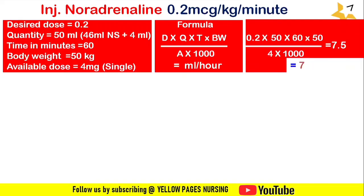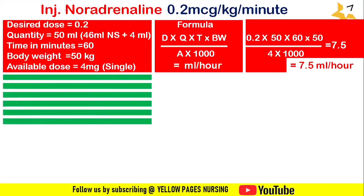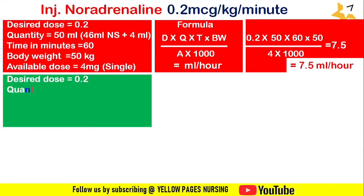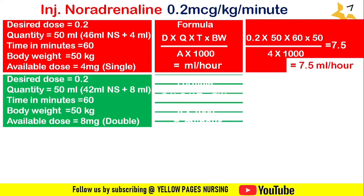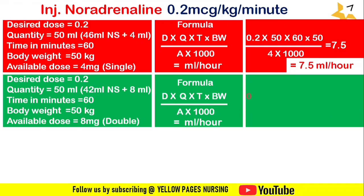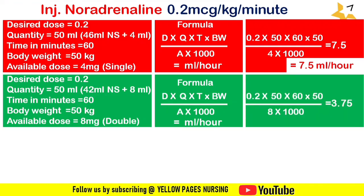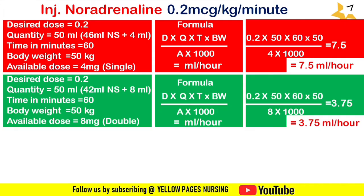For double strength: desired dose = 0.2, quantity = 50 ml (42 ml normal saline + 8 ml noradrenaline), time = 60 minutes, body weight = 50 kg, available dose = 8 mg. Applying the formula gives the answer: 3.75 ml per hour.